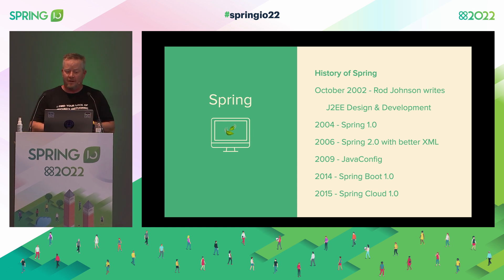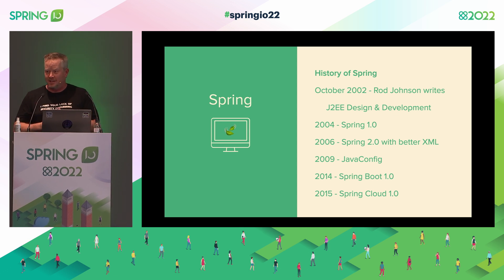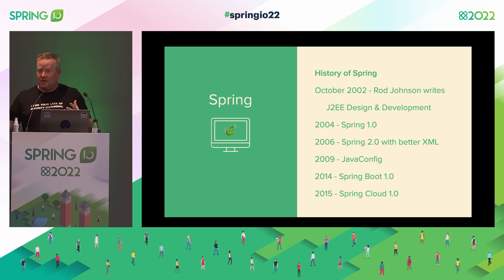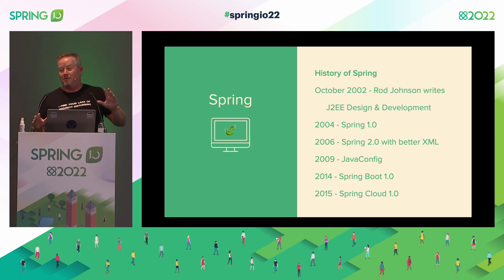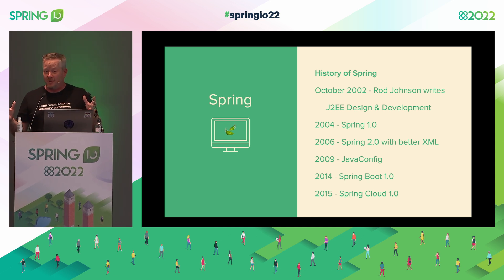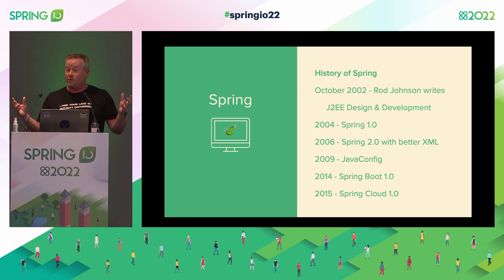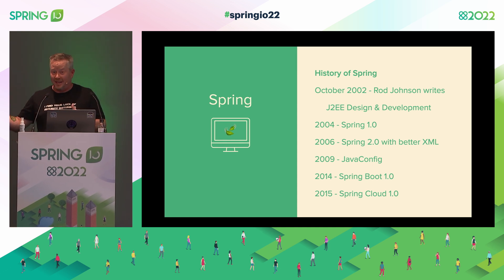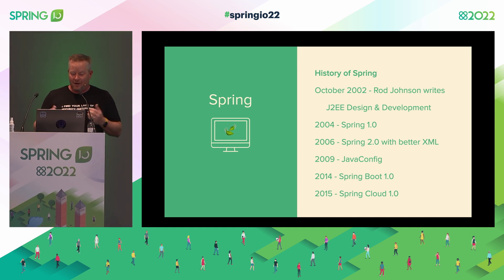Just to give you a brief history of Spring: October 2002, Rod Johnson first wrote J2EE Design and Development. For people using EJBs, it looked like a much easier way to do things. Spring 1.0 came out in 2004 — the same year as JSF 1.0, which did okay, and Flex 1.0, which didn't. Ajax wasn't even a thing yet. Then Spring 2.0 in 2006 brought better XML support with schemas. Around 2009–2010, Spring wasn't as popular because people started seeing it as XML hell.